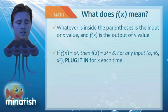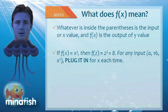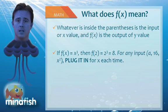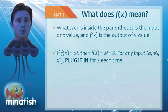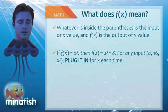So when I say f of 2, that is not f times 2. That is: what is the function equal to when x is made 2? To do this problem, think cut and paste — you're going to cut all the x's out and paste in 2's. So f of 2 will be 2 to the third, which equals 8. No matter what the input is, follow this cut and paste procedure, whether it's a, 16, or x squared.